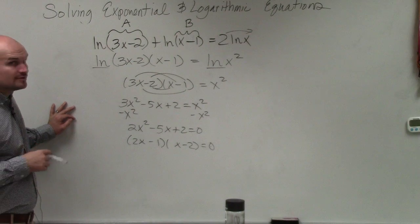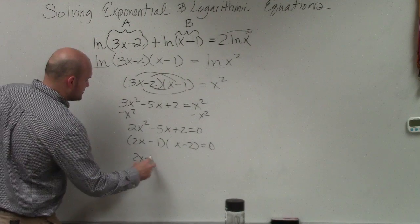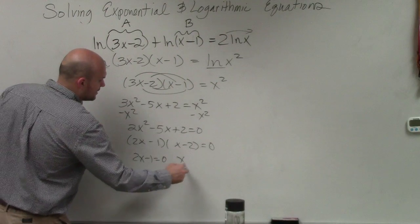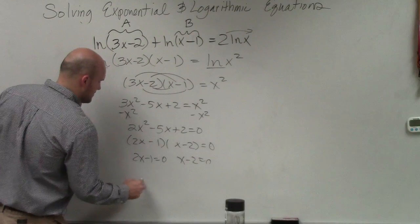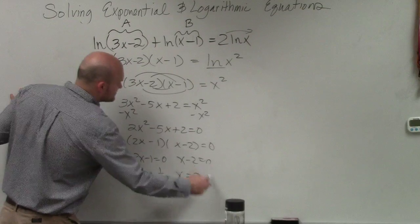OK, now the reason why we like factoring is because now we can apply the zero product property. So I can say 2x minus 1 equals 0, and x minus 2 equals 0. Therefore, x equals 1/2, and x equals positive 2.